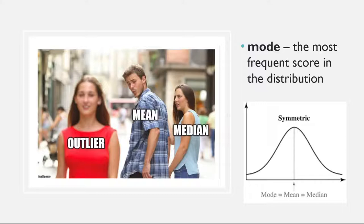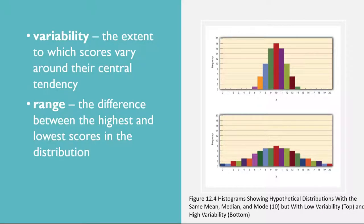Keep in mind, though, that you're not required to choose a single measure of central tendency in analyzing your data. Each one provides slightly different information, and all of them can be useful. Measures of variability. The variability of a distribution is the extent to which the scores vary around their central tendency. Consider the two distributions in figure 12.4, both of which have the same central tendency — the mean, median, and mode of each distribution are 10. Notice, however, that the two distributions differ in terms of their variability. The top one has relatively low variability, with all of the scores relatively close to the center. The bottom one has relatively high variability, with the scores spread across a much greater range.